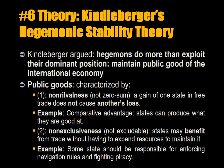The sixth theory is Kindleberger's hegemonic stability theory and war. Sometimes a status quo hegemon declines, such as the British Empire, and another potential hegemon arises, such as the US, but there is no transition or hand-over of the hegemony. Kindleberger argued that hegemons do more than exploit their dominant position to extract resources from the international system — that the international system is a public good that benefits all states, and it is in the interest of the hegemon to ensure that the system continues to work.